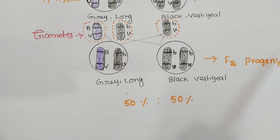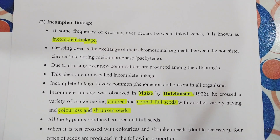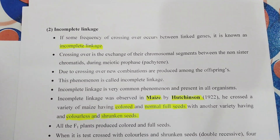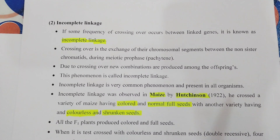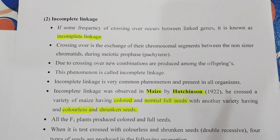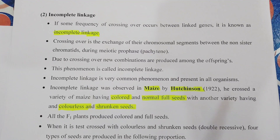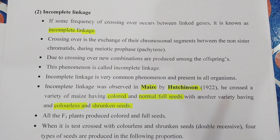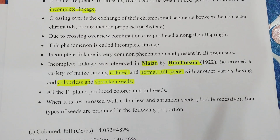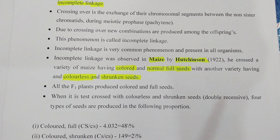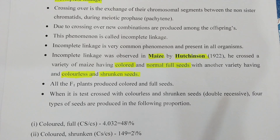Now let's see incomplete linkage. If crossing over occurs between linked genes — that means if crossing over is present between two genes — then we get recombinants in the next generation. Crossing over is a phenomenon where two chromosomal segments are exchanged between non-sister chromatids during meiotic prophase. Due to crossing over, new combinations are produced among the offspring. This phenomenon is nothing but incomplete linkage, and it is very common in all organisms.